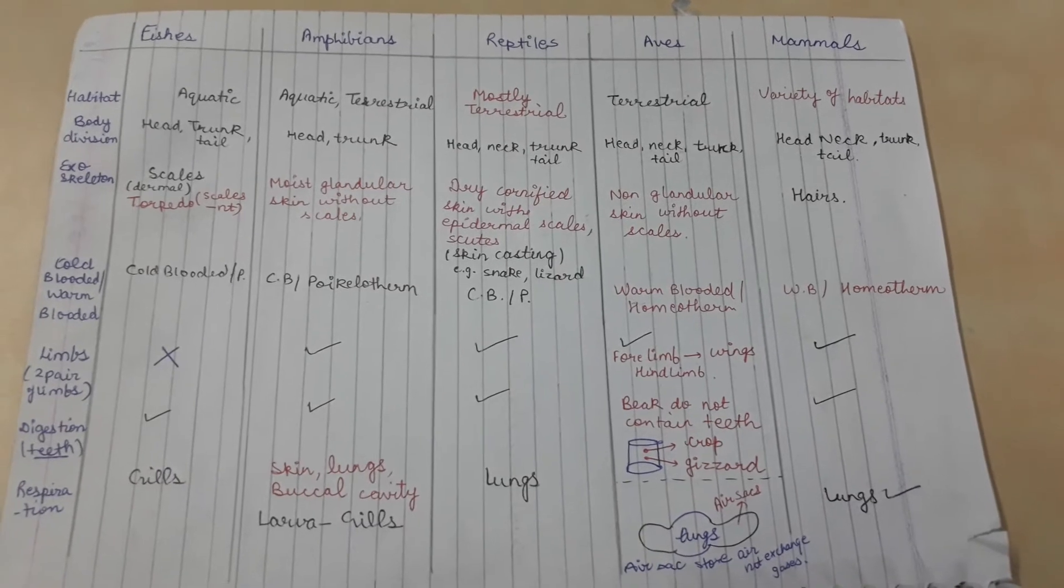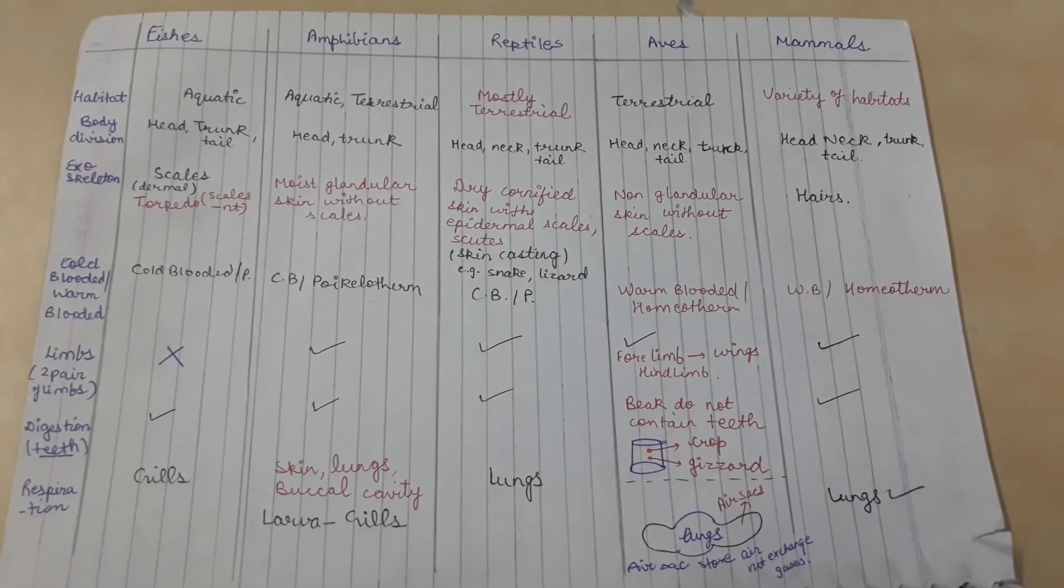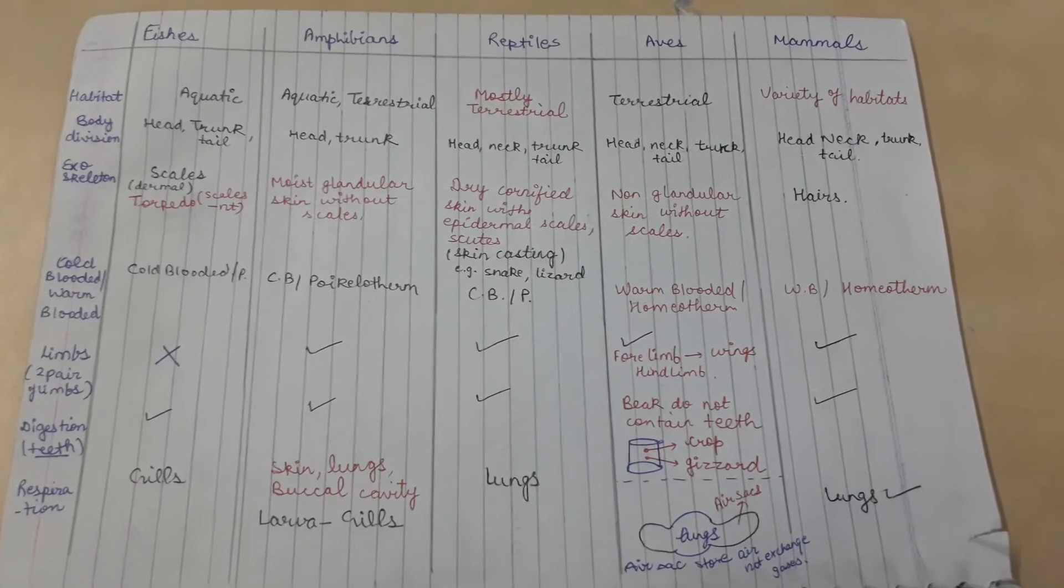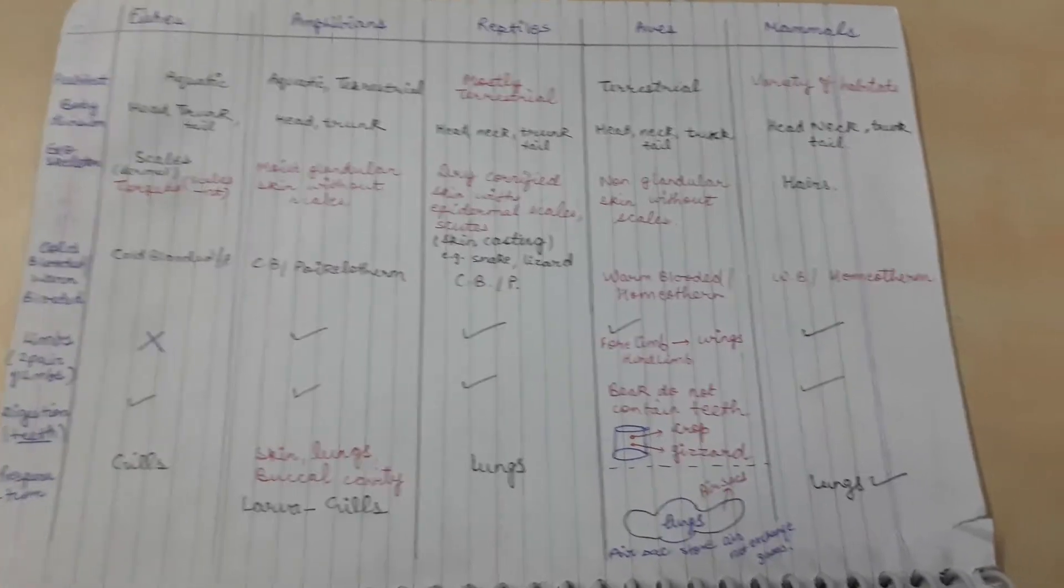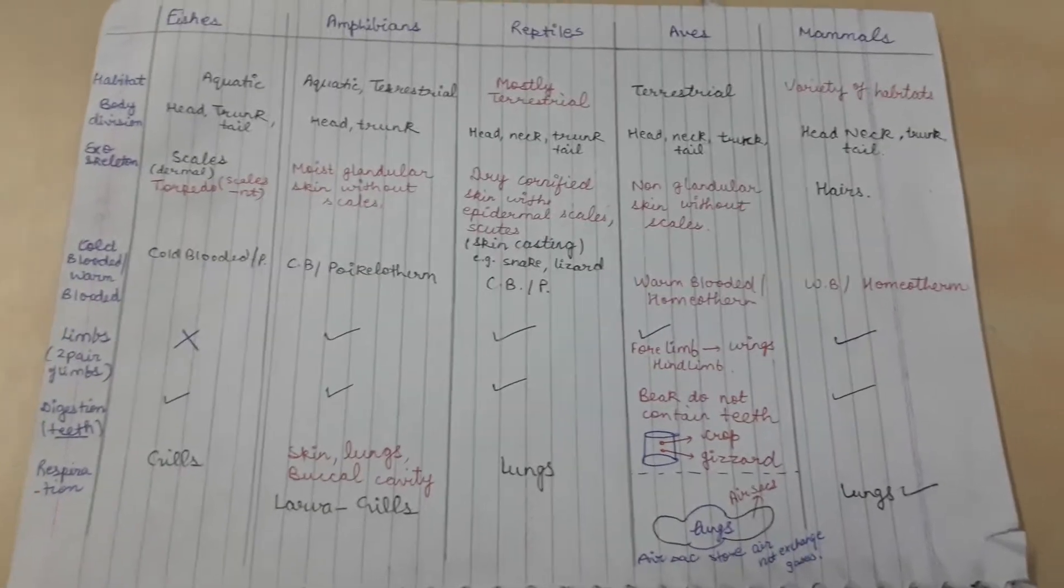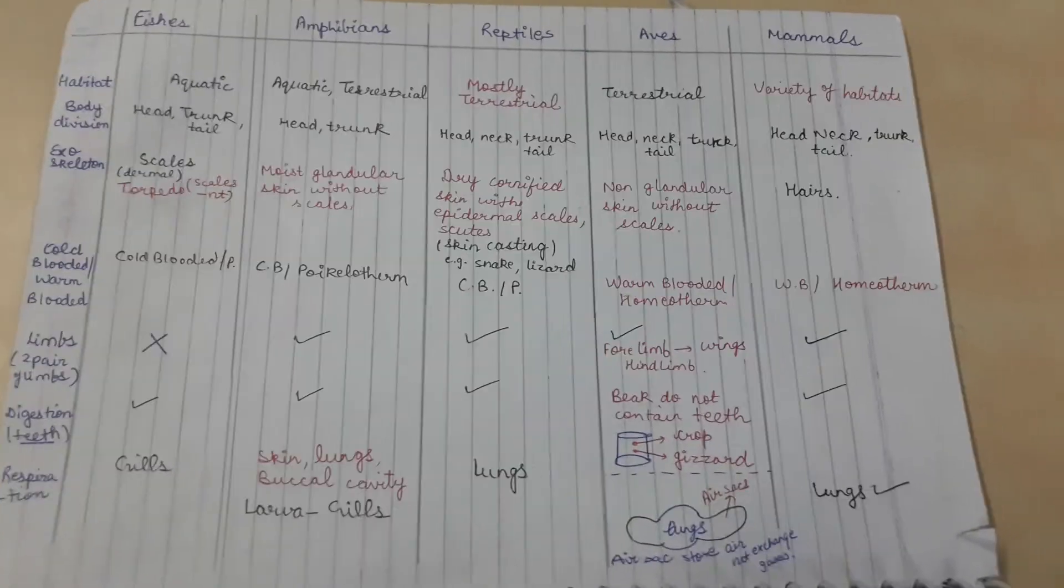Digestion: fishes have teeth, amphibians have teeth, reptiles have teeth. Aves do not have teeth. Rather, in their digestive system they have two very important parts known as crop and gizzard. Mammals do have teeth like us.